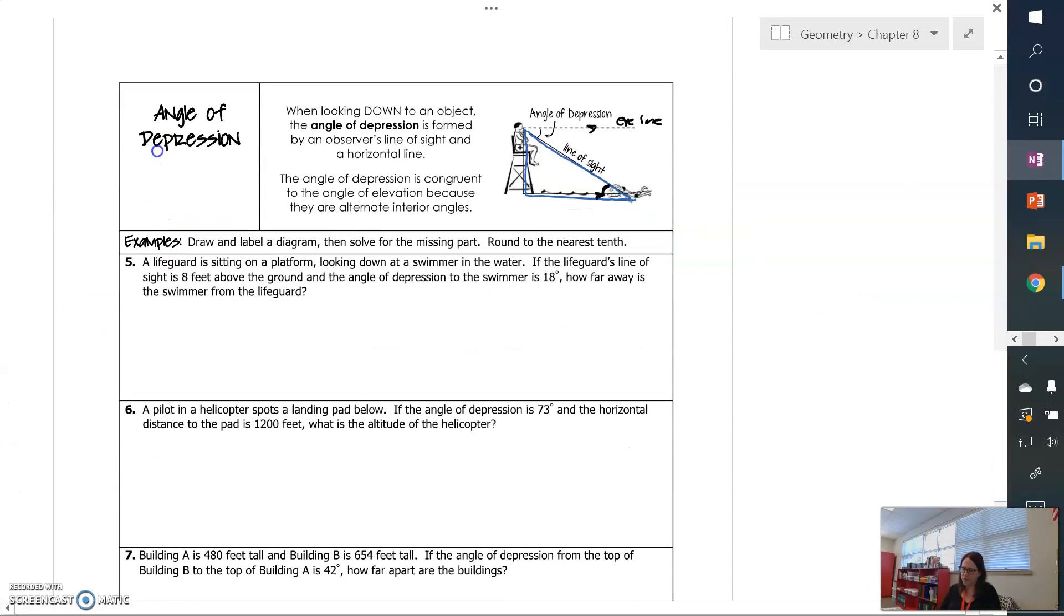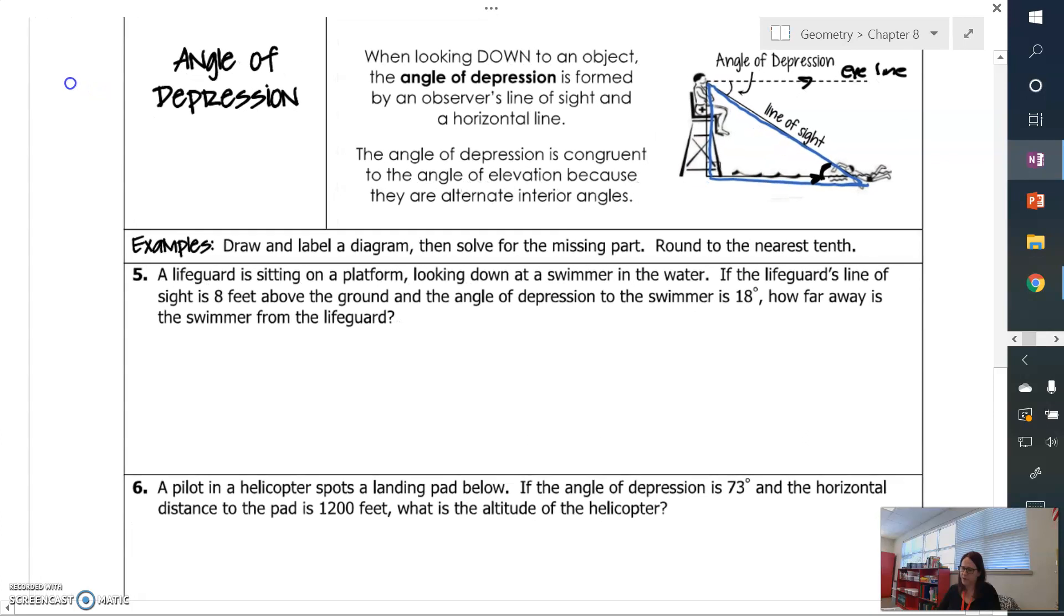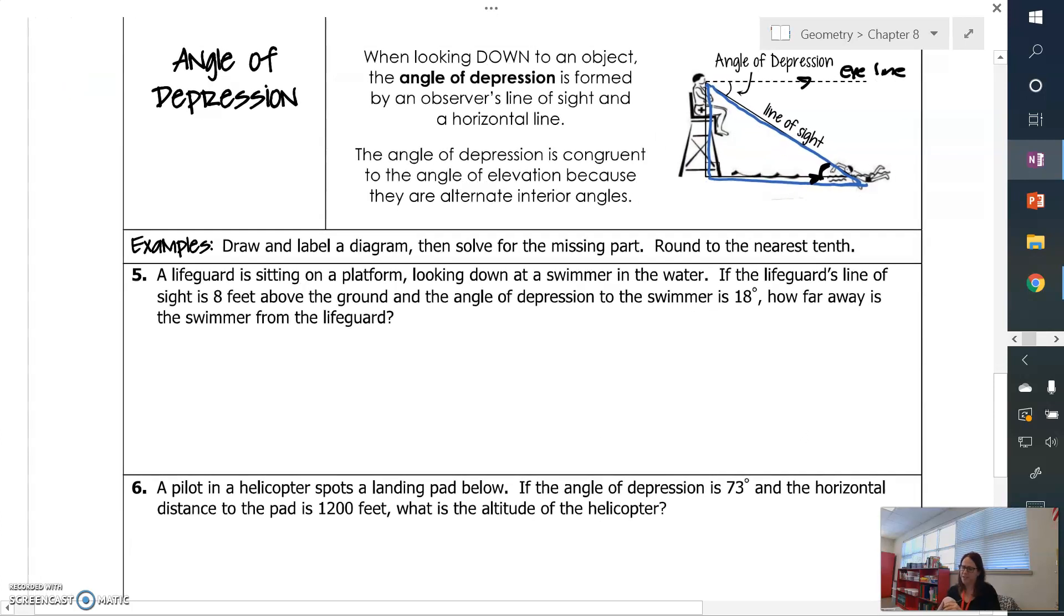So then this works just like all the other problems we've done. Angle of depression is also a vocab word. And right here is your definition. When looking down to an object, the angle of depression is formed by an observer's line of sight and a horizontal line. And then the next thing it tells you is that you're going to have your angle of depression and an angle of elevation. So if you think of like the swimmer looking up at the lifeguard, that's your angle of elevation. And they are actually congruent because of alternate interior angles.